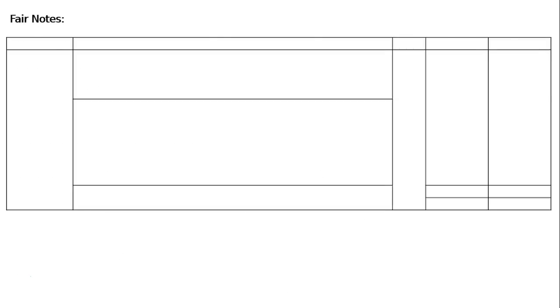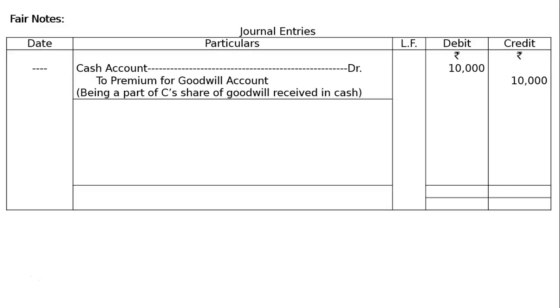Fair notes, journal format. First entry: Cash account debited, to Premium for Goodwill account 10,000, being a part of C's share of goodwill received in cash.